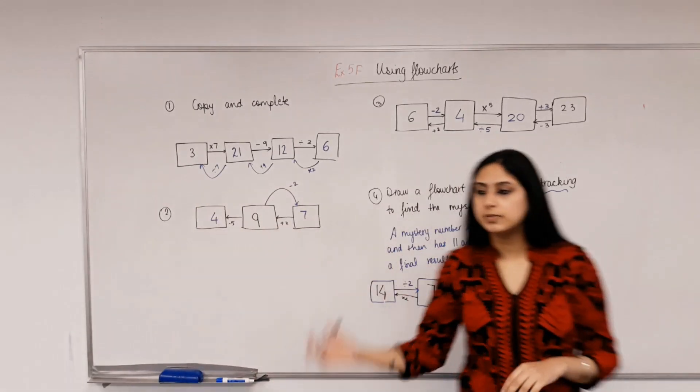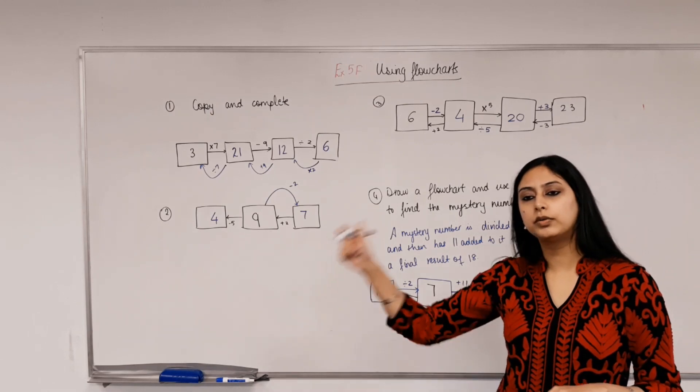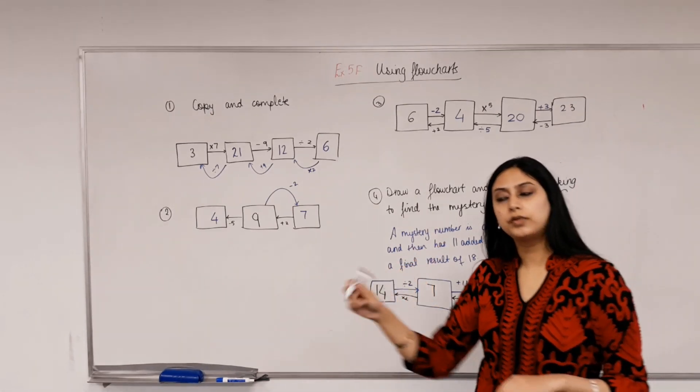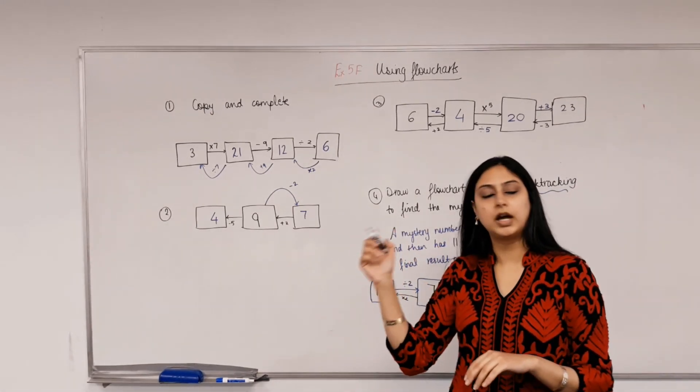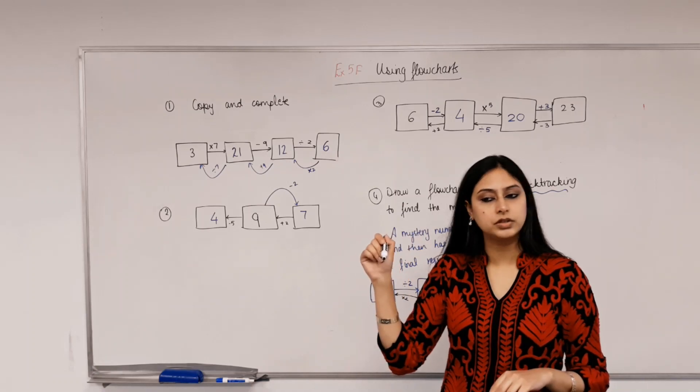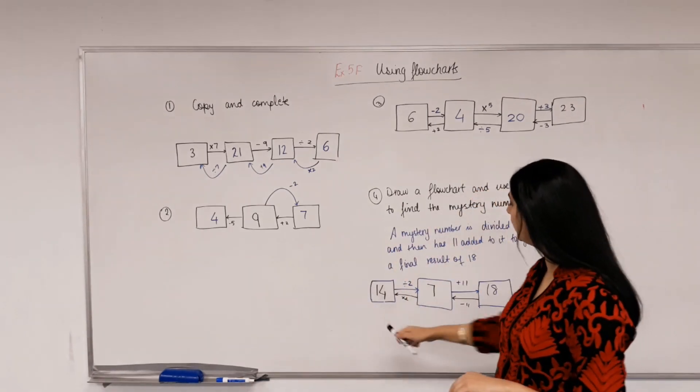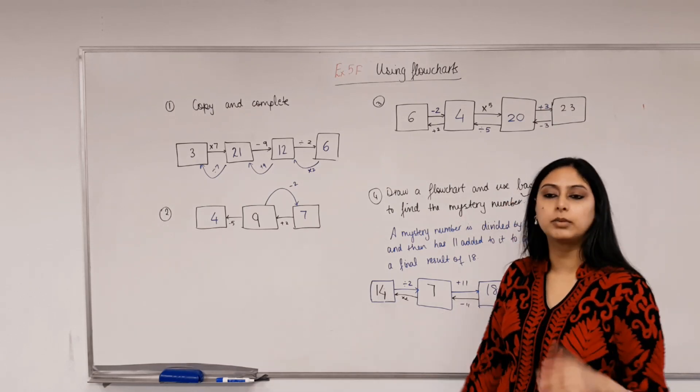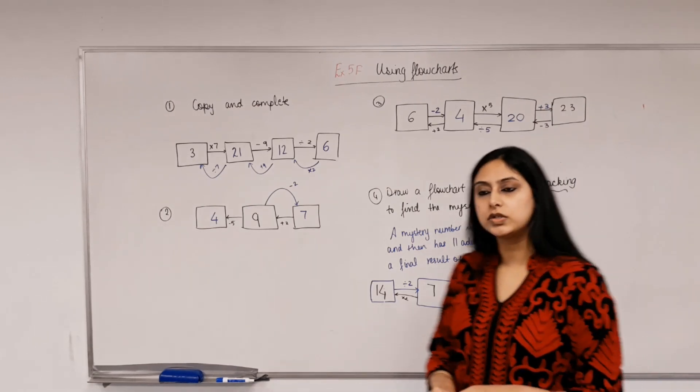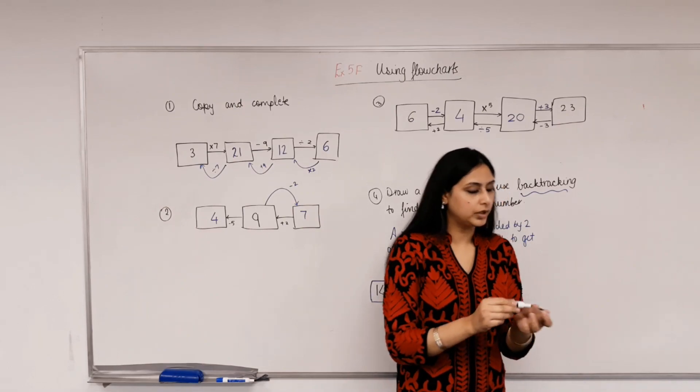Any questions? Is this making sense? So, do we know how to complete a flowchart? So, if an operation is given in one direction, how do we find the operation in the opposite direction? The opposite of it. And then we can use that backtracking to find any missing number in the flowchart. Any questions? Perfect. Get on with your work. Thank you.